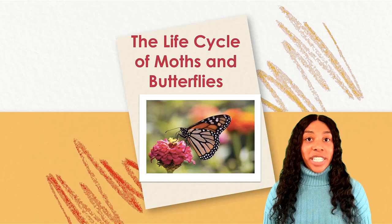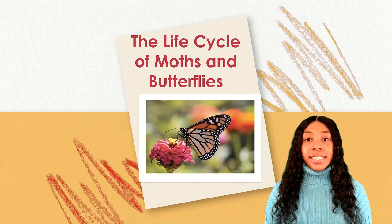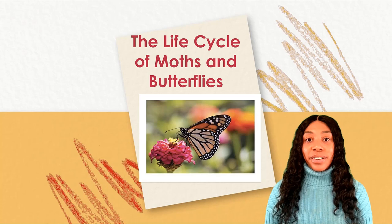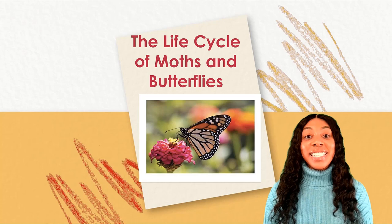Butterflies and moths are insects. They are called advanced insects because they have a complete life cycle. This means that each of the four stages of their life cycle looks completely different and serves a different purpose in the insect's life.